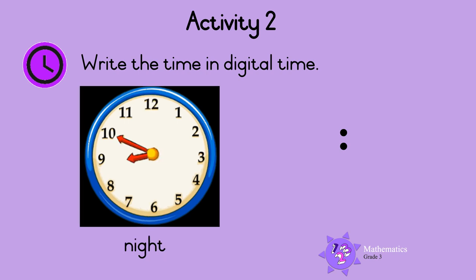Last one. The minute hand is on 10 — that shows 50 minutes. The hour hand is between 8 and 9, so it's still the 8th hour. But it's the 8th hour at night, so we write 10 minutes to 9 like this. Remember, this is the digital time for 10 minutes to 9 at night. Well done!